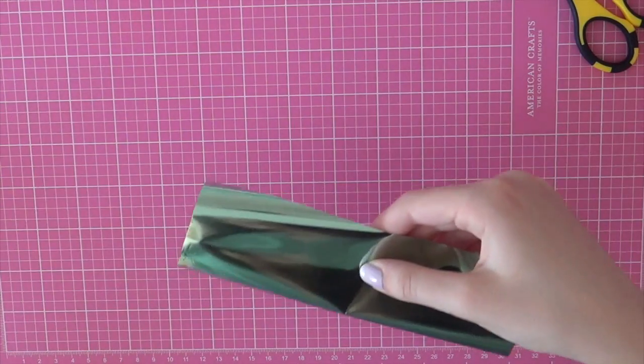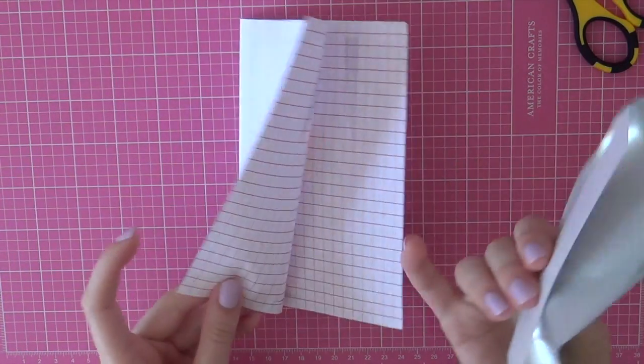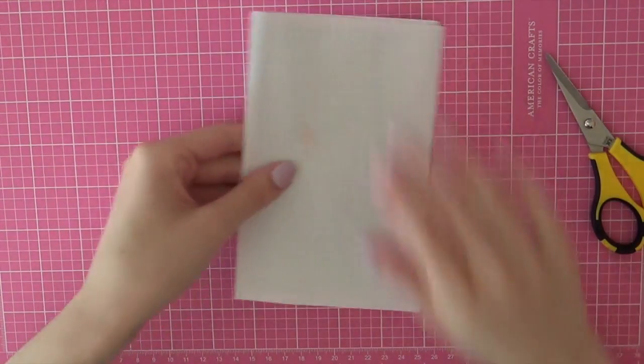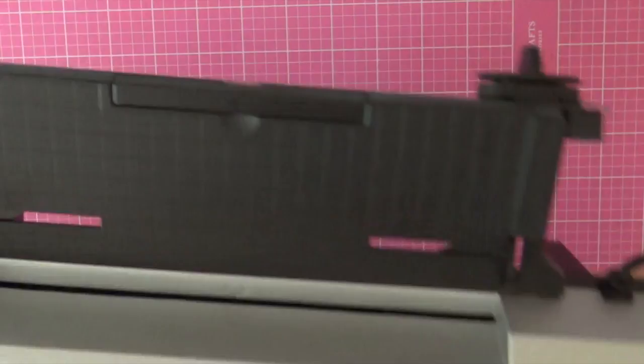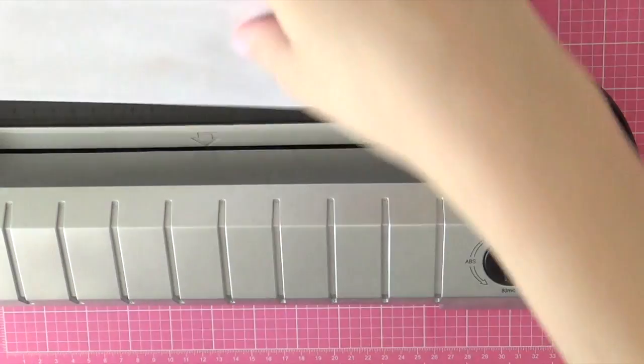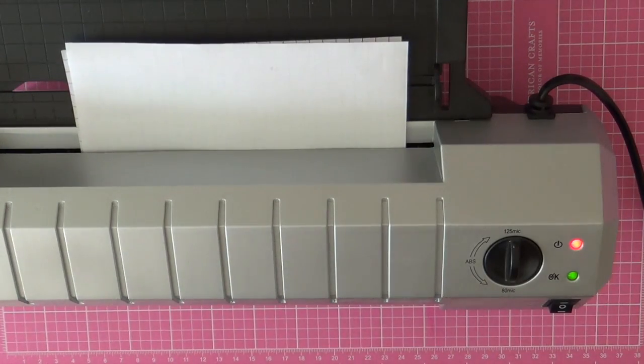So I cut a piece of mint foil from Heidi Swapp a little bit smaller and then I'm going to put that piece between a scrap piece of printer paper and I am doing that so I can protect my laminator from any foil that can stick to it. I'm just going to let my laminator get really nice and hot and then I can transfer that through my laminator.